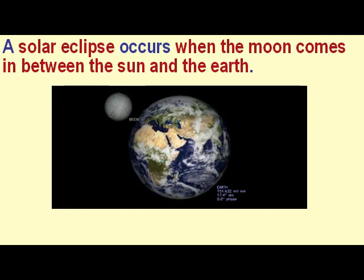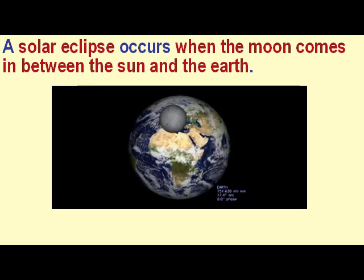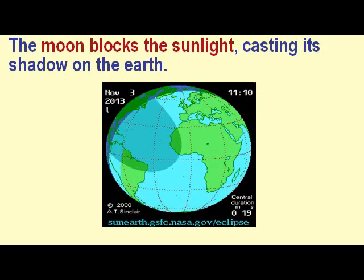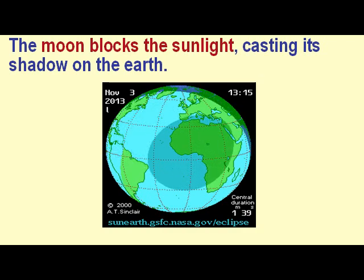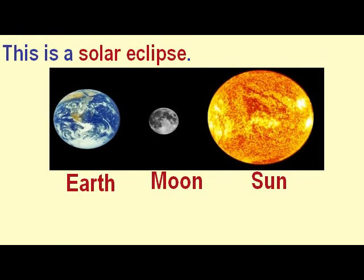A solar eclipse occurs when the moon comes in between the sun and the earth. The moon blocks the sunlight, casting its shadow on the earth. The people living on that part of the earth where the shadow of the moon falls can see only a part of the sun, or cannot see the sun at all, for a short period.